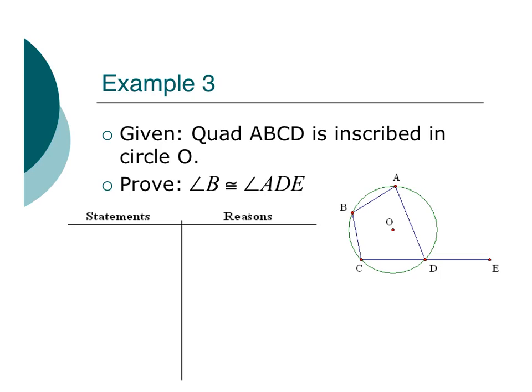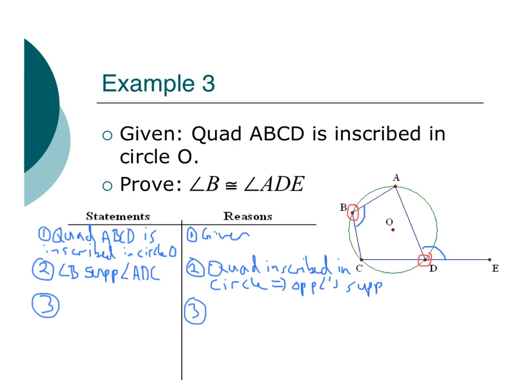We're given this quadrilateral ABCD is inscribed in circle O. We want to prove that angle B is congruent to angle ADE. So I want to prove that these two are congruent. Now let's look at the rest of this. All I'm given is that it's inscribed in the circle, but that is a very powerful statement. If it's inscribed in the circle, I know that my two opposite angles, angle B and angle ADC, are supplementary. So I've got my given, and I have that angle B is supplementary to angle ADC because if a quad is inscribed in a circle, then the opposite angles are supplementary.